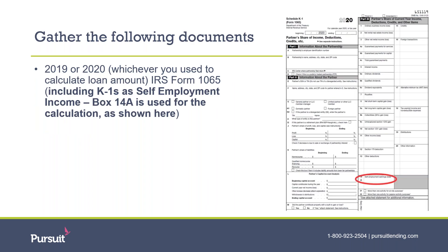The main form included within your IRS Form 1065 that will be utilized for the calculation of the maximum loan amount for your PPP loan is Schedule K-1. Each partner or member of the business will have a separate K-1, which will need to be provided for the calculation.